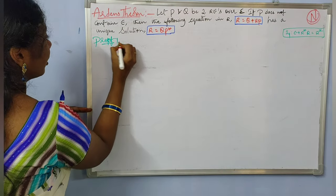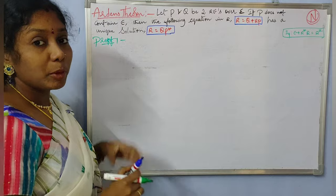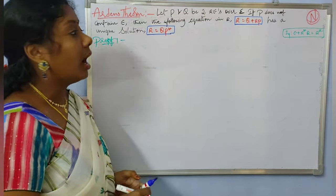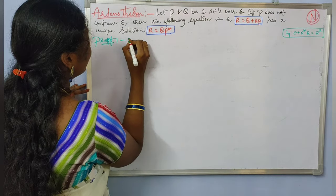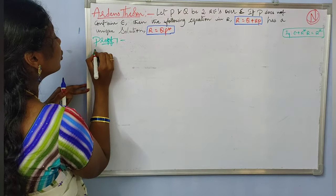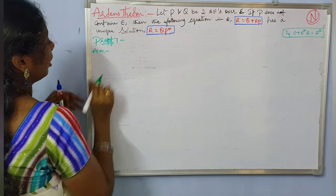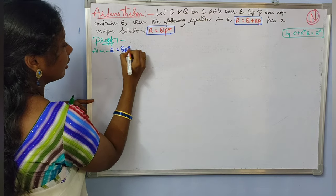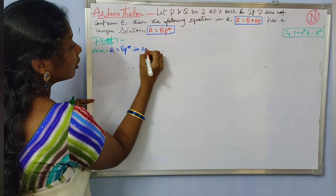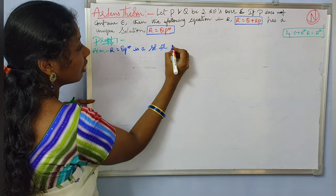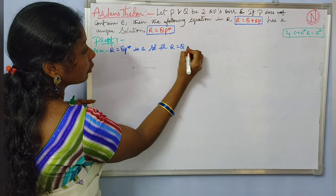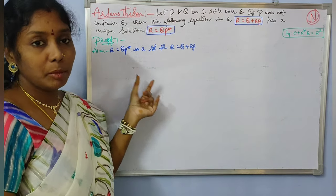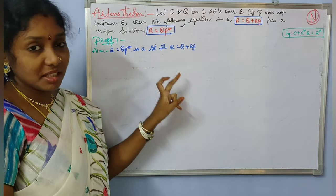Proof one: R equal to QP star is a solution for R equal to Q plus RP. Our aim is to prove that R equal to QP star is a solution for R equal to Q plus RP. Initially, let us assume that this is a solution.